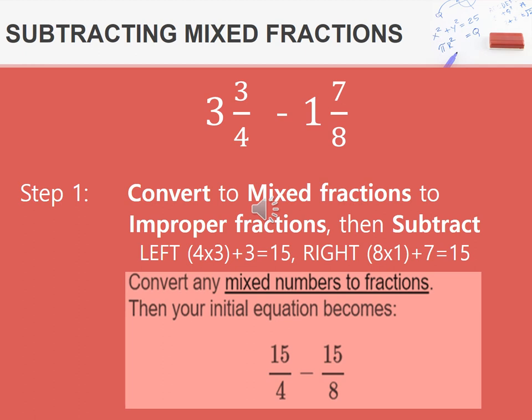We will firstly write down our 4, which is the denominator on the left. Then we multiply 4 times 3, which is 12. 12 plus 3 is 15. That's how we end up with 15 over 4. On the right-hand side, we will multiply 8 multiplied by 1, add 7, which gives us 15. We also write down the same denominator as the mixed fraction, which is the 8. We then end up with 15 over 8.